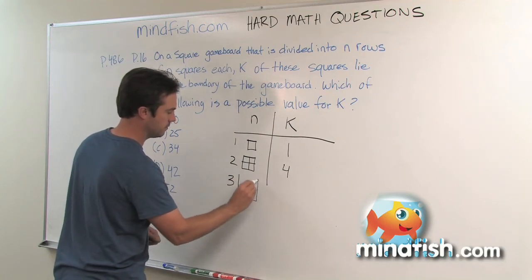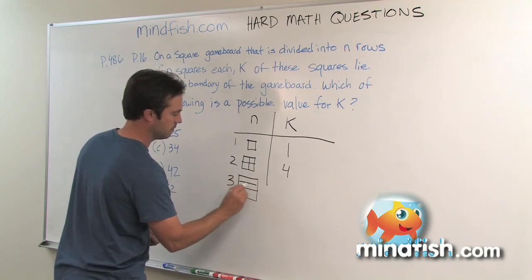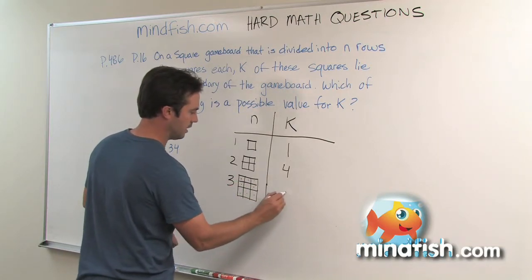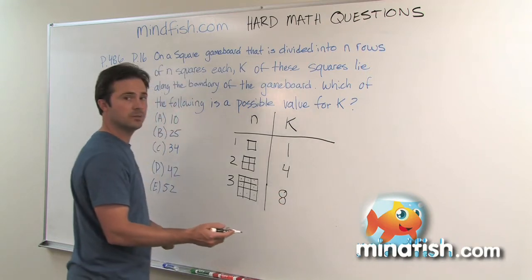If n is 3, counting the boundary squares 1, 2, 3, 4, 5, 6, 7, 8, then k is going to be 8. Can you see the pattern yet? Almost there.